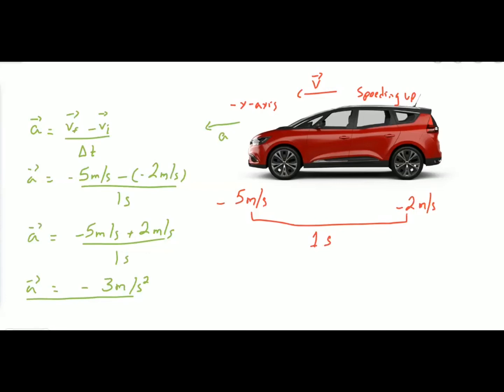Since the acceleration is negative, it is considered negative acceleration. Comparing with the first example where the car moved towards the positive x-axis and was speeding up — acceleration was positive and in the same direction as velocity. Now, with velocity towards the negative x-axis and the car speeding up, we get negative acceleration.